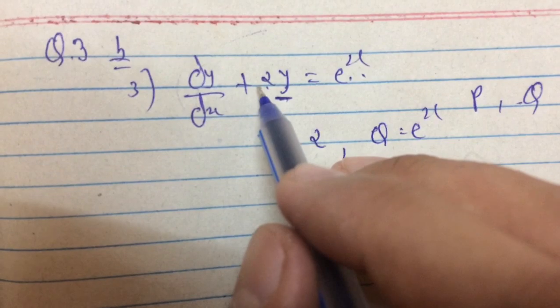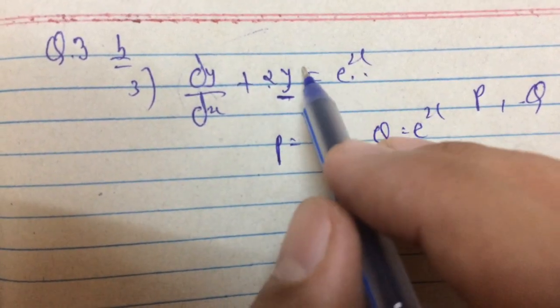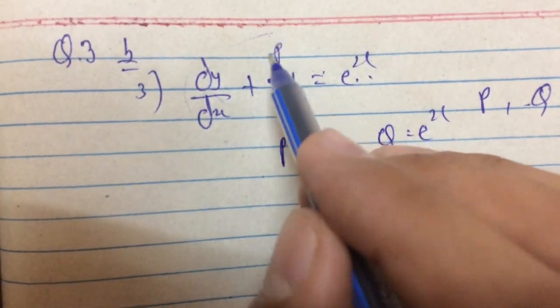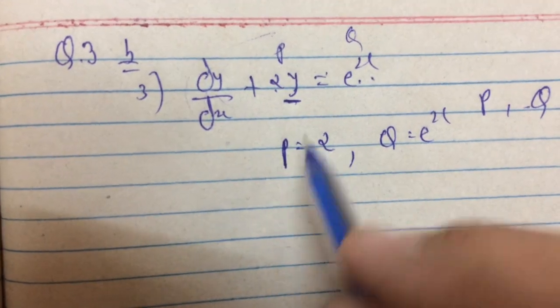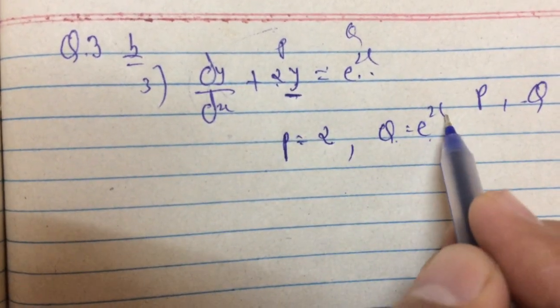The equation is already arranged in P and Q form. So P equals 2 and Q equals e raised to x.